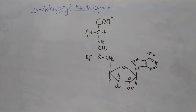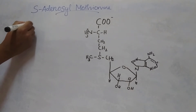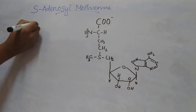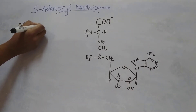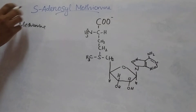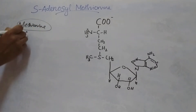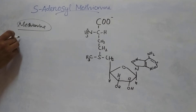Hello everyone, today we will discuss S-adenosyl methionine. It is the active form of methionine. S-adenosyl methionine is an intermediate in the metabolic pathway of methionine.